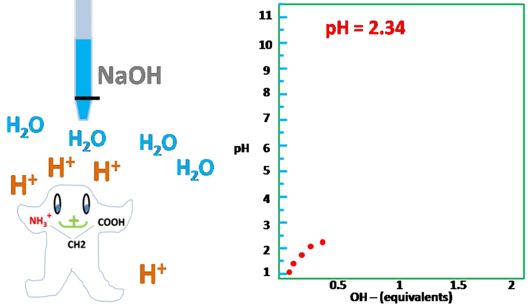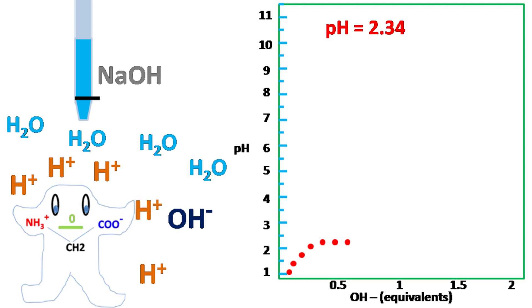At pH 2.34, the carboxyl group of glycine donates its H plus ion. As a result of this donation of H plus ion by the carboxyl group of glycine, the NaOH gets neutralized.